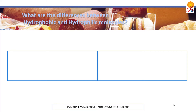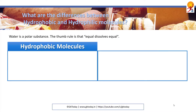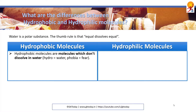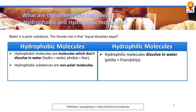What are the differences between hydrophobic and hydrophilic molecules? Water is a polar substance, and the rule of thumb is that like dissolves like — meaning nonpolar substances dissolve in nonpolar liquids whereas polar substances dissolve in polar liquids. Hydro means water; phobic means fear, so hydrophobic molecules don't dissolve in water. Philia means friendship, so hydrophilic molecules dissolve in water. Hydrophobic substances are nonpolar molecules; hydrophilic are polar.